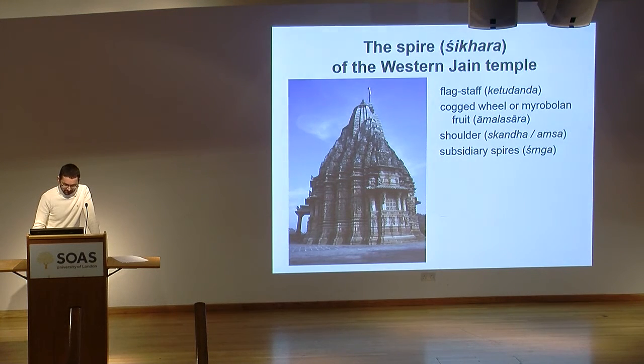As regards the cogged wheel which crowns the shikara, Soma Prabha calls this the mirabolon fruit, amalasara, in conformity with the treatises. This amalasara is separated from the shikara by a narrower section that the theoreticians call the neck, griva. And in keeping with this anthropomorphic vision of the tower, the summit of the shikara, which supports the neck, is called the shoulder, skanda. Ramachandra uses either this word or its synonymous hamsa, and evokes many times the staff, danda, which springs from this shoulder and supports the bannered vajja or ketu.